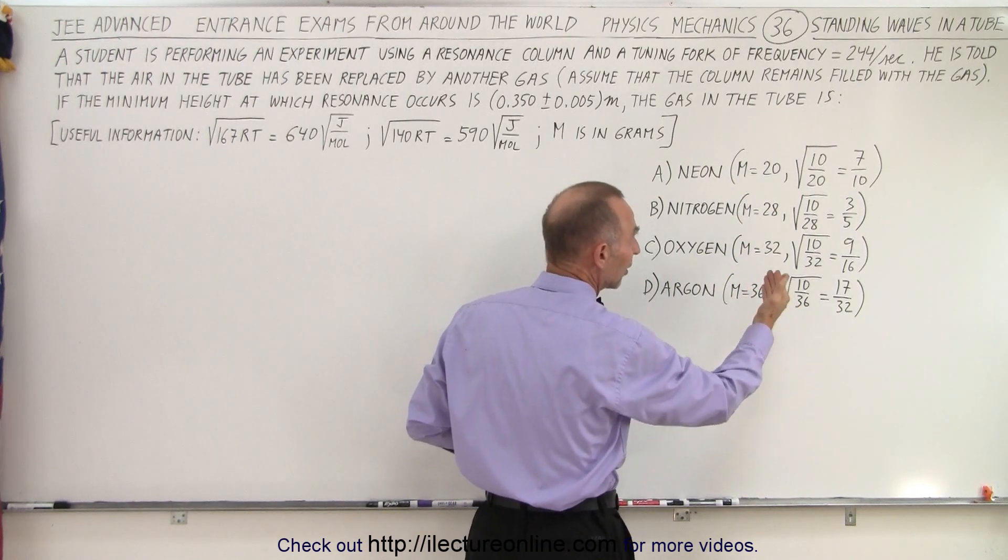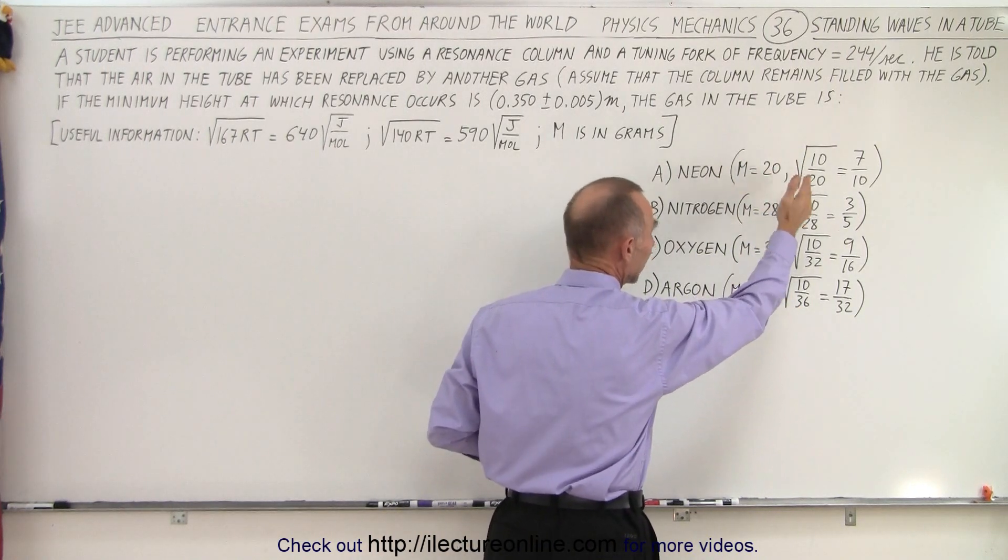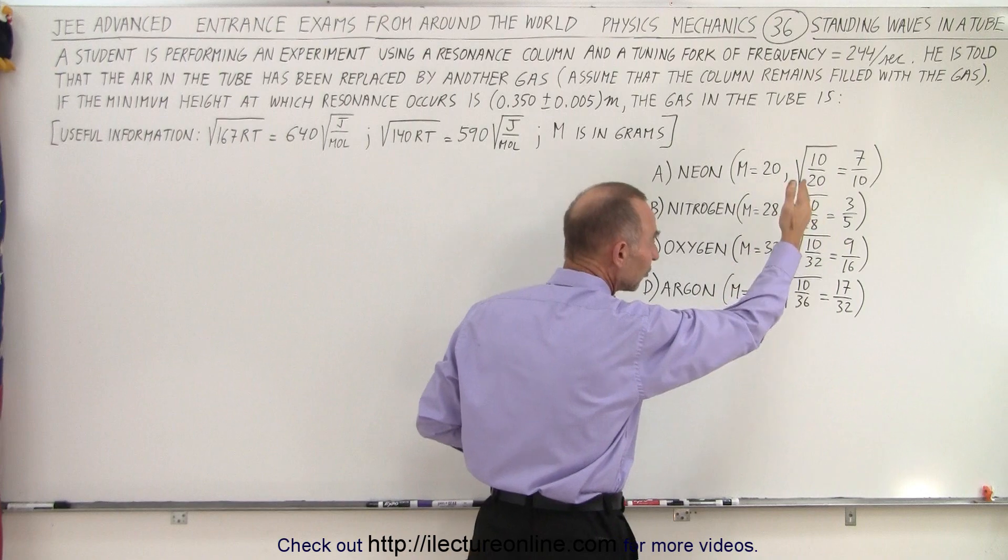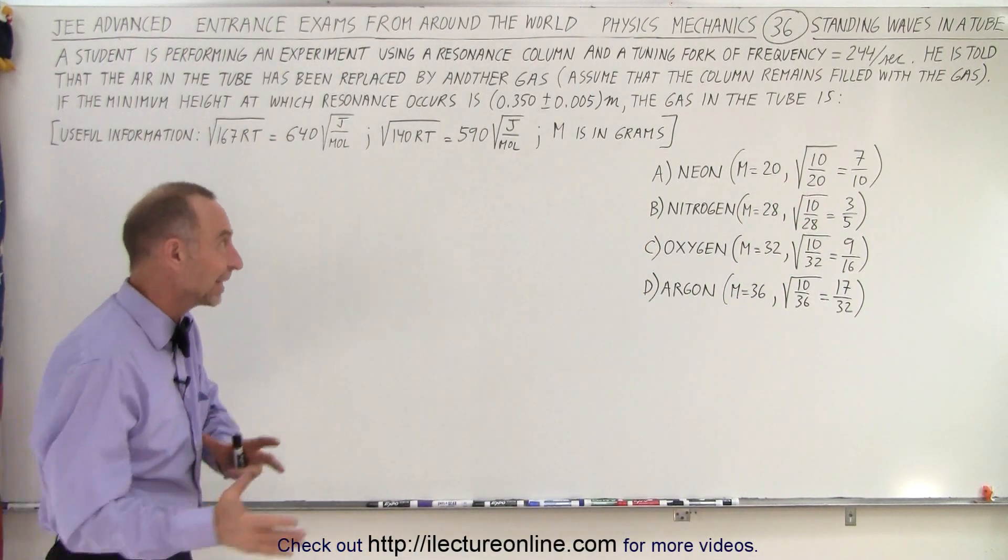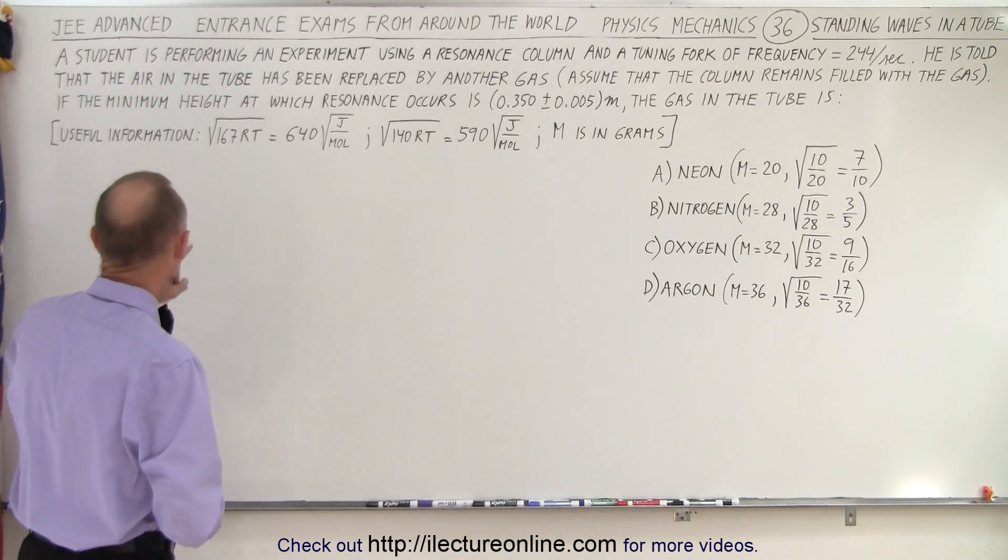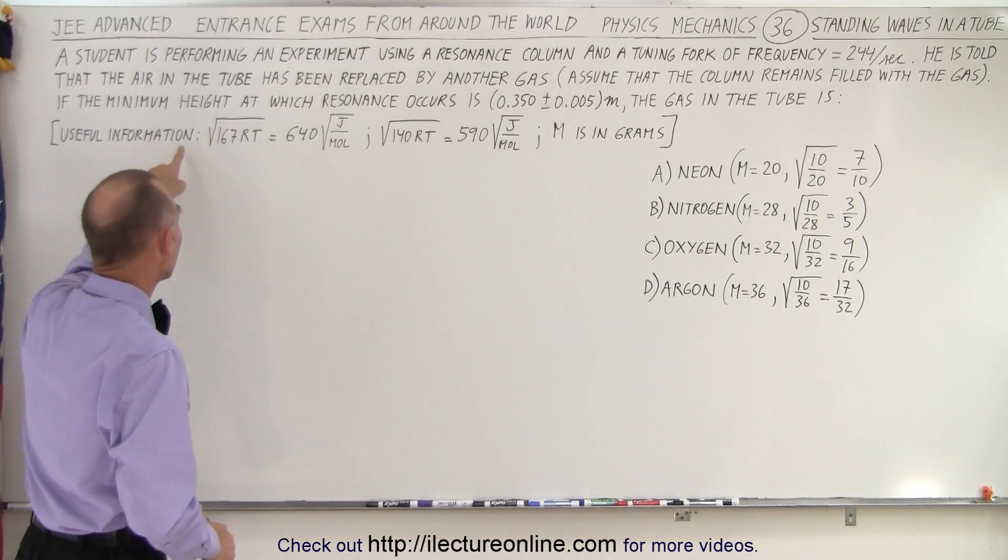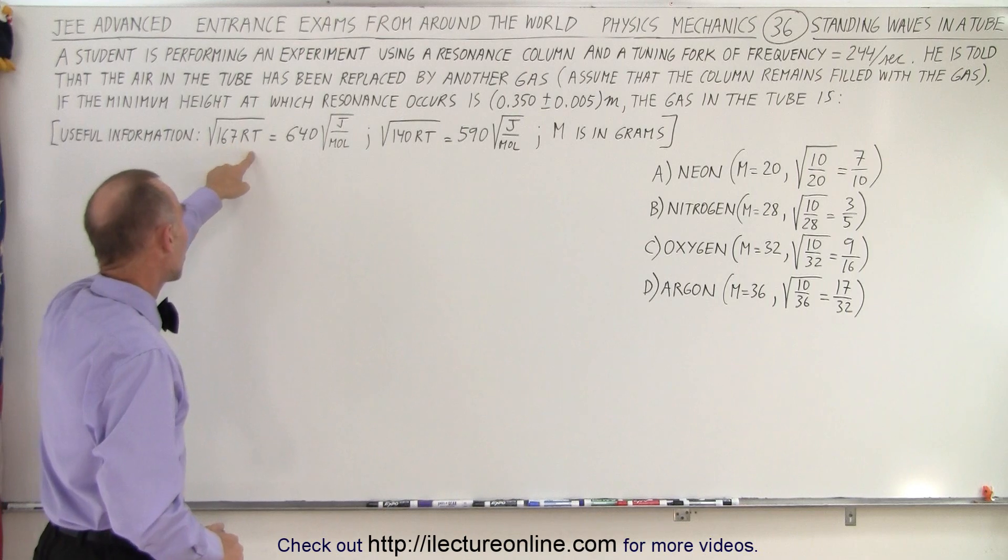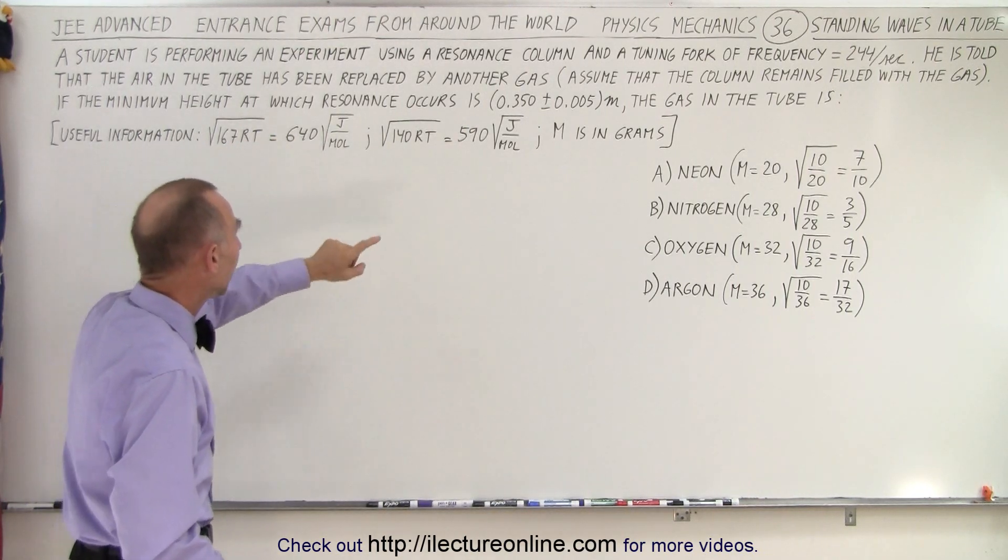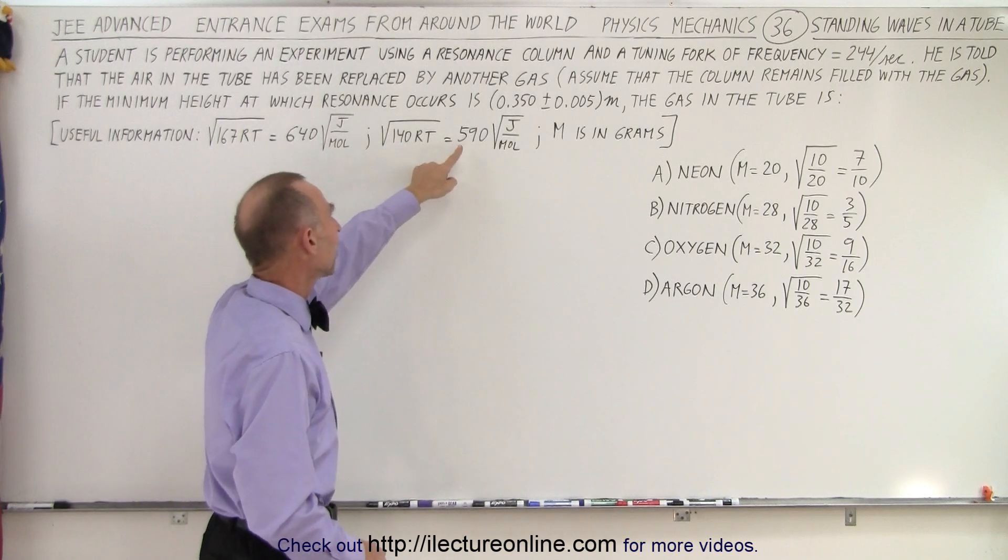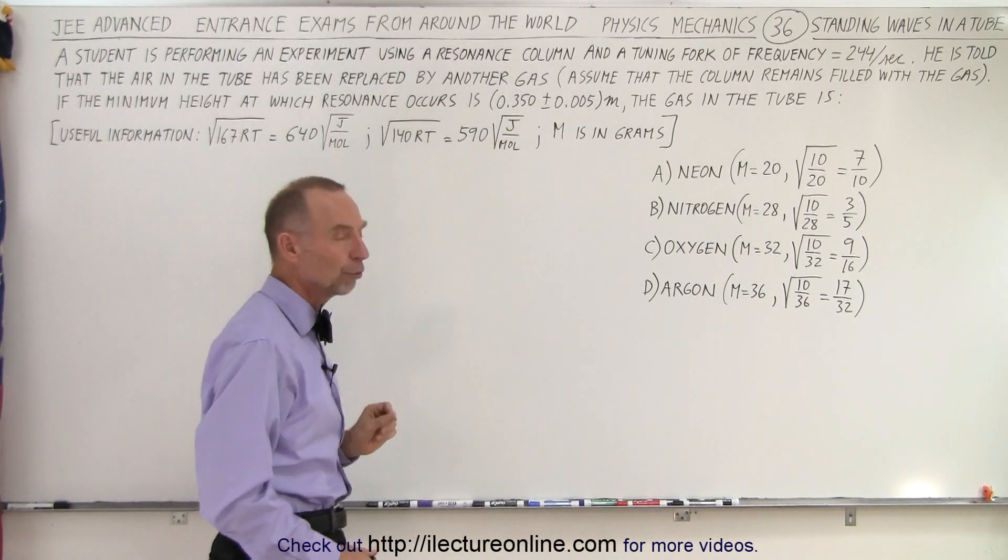They give us that the square root of 10 divided by that molar mass in grams is a particular fraction. They give us some other useful information that 167 times RT is equal to 640 square root of joules per mole and 140 RT is equal to 590 times the square root of joule over mole.